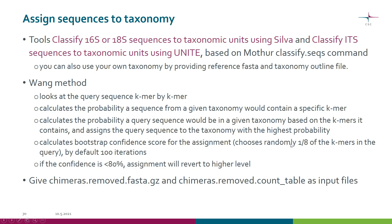It randomly chooses one eighth of the k-mers in the query, and by default it does 100 iterations, but you can increase this. If the confidence score is less than 80%, the assignment will revert to a higher level — so it will be dropped.